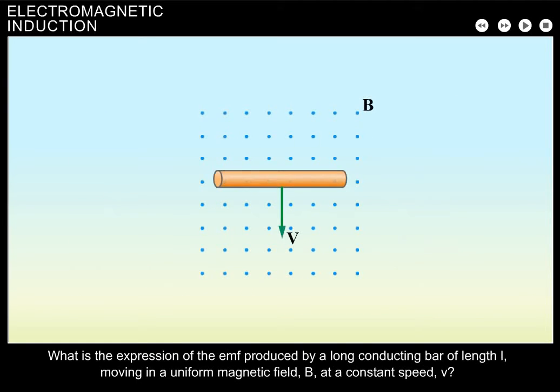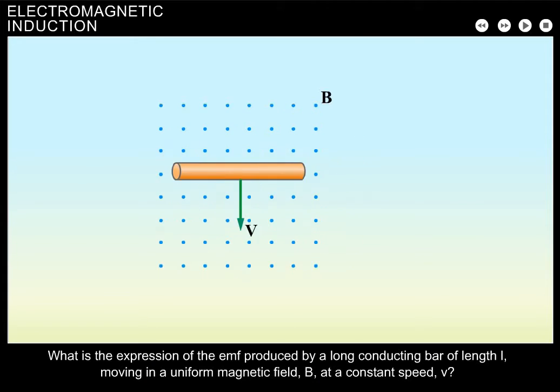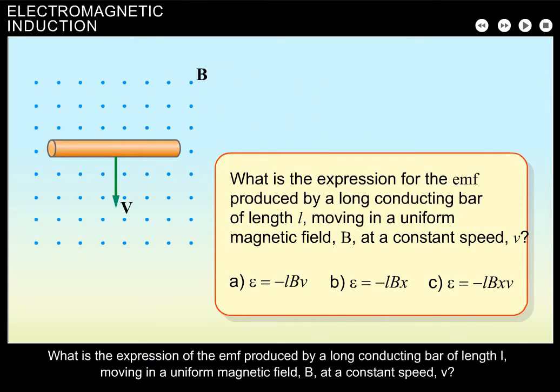What is the expression of the EMF produced by a long conducting bar of length L moving in a uniform magnetic field B at a constant speed V?